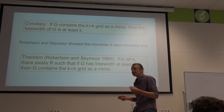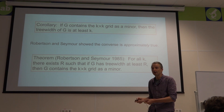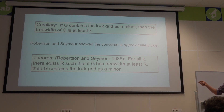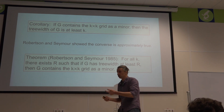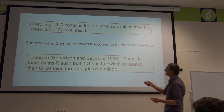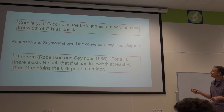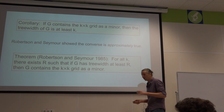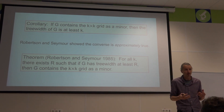So if I contain as a minor one of those examples — a grid, a clique, an expander — the tree width has to be at least the tree width of those. Specifically, if I contain the k-by-k grid as a minor, the tree width of G is at least k. Robertson and Seymour showed the converse is approximately true: for all k there exists some r such that if I have tree width at least r, then I contain the k-by-k grid as a minor. So grids are the canonical graphs forcing large tree width.